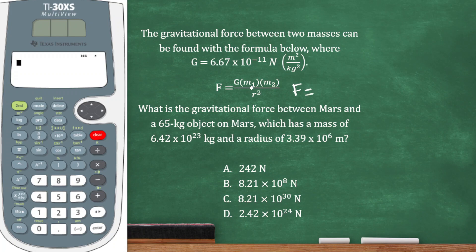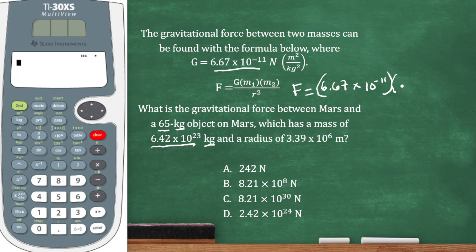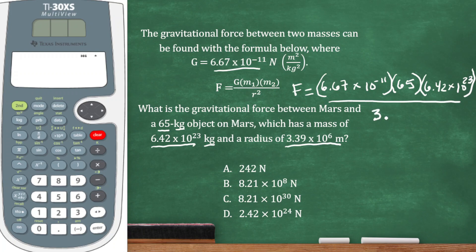Let's put everything into the formula. F equals G — which is 6.67 times 10 to the negative 11th, in parentheses — times M₁ and M₂. Both values are followed by kilograms so I know they're both masses: times 65 times 6.42 times 10 to the 23rd. And that's all over R squared — here's my radius: 3.39 times 10 to the 6th, and that whole thing is squared. Now all we have to do is enter it into the calculator.